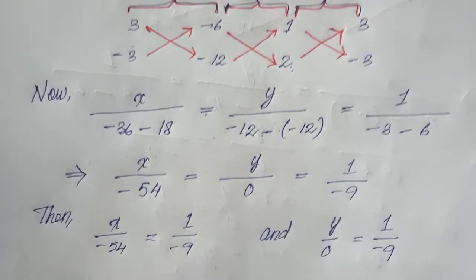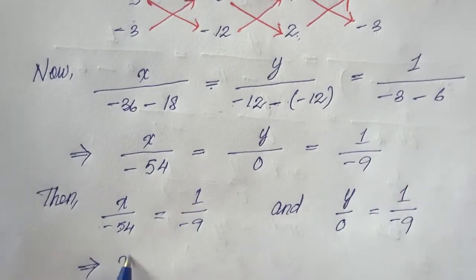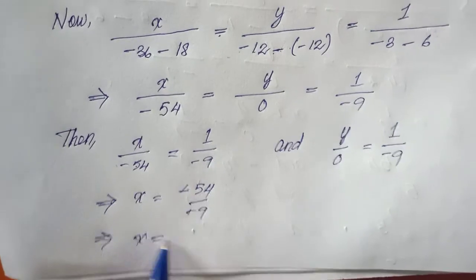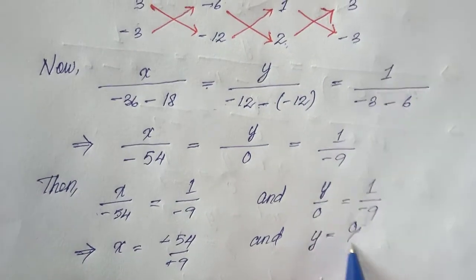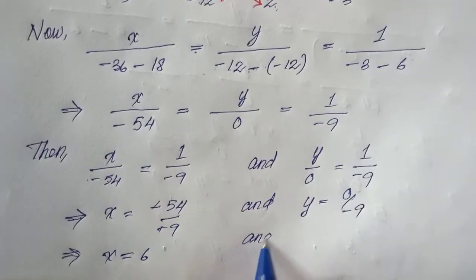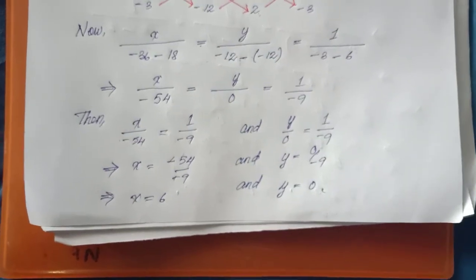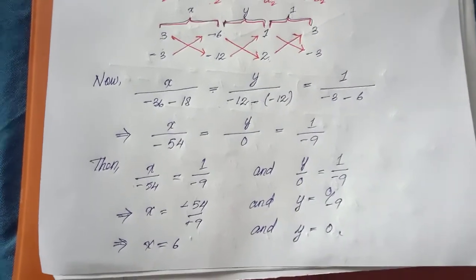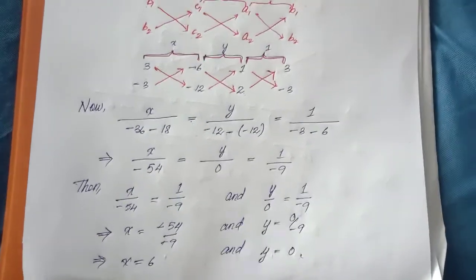Taking each part equal to the constant: x equals negative 54 divided by negative 9, which gives x equals 6. And y equals 0 divided by negative 9, which gives y equals 0. So the solution is x equals 6 and y equals 0. Linear equations require finding the unknown variables x and y — that is what cross multiplication achieves. That's all for question number one.